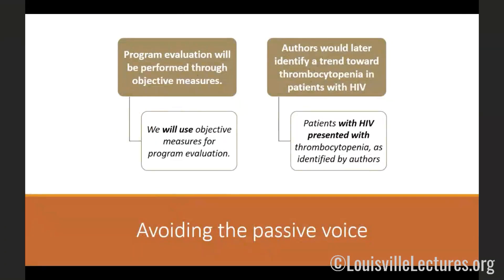A note on writing: you really need to avoid the passive voice. For example, the sentence 'Program evaluation will be performed through objective measures' becomes stronger as 'We will use objective measures for program evaluation.' Another example: 'Authors would later identify a trend towards thrombocytopenia in patients with HIV' can be reworded to 'Patients with HIV presented with thrombocytopenia as identified by authors.' You take the subject and orient it at the beginning of the sentence, with the object towards the end. That's how you strengthen your sentences and make your language more convincing.